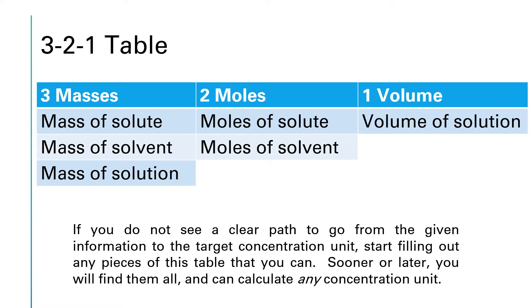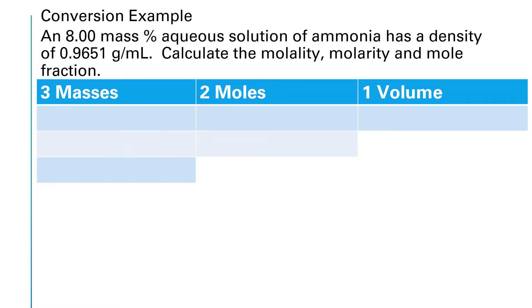Typically, once you pick your easy amount to work with and you fill it into this table, you can see something else that you can calculate. Like, if you have the mass of the solvent, you can use the molar mass to find moles of solvent. And once you start doing that, you kind of get on a roll to figure out all of these numbers. And once you have all of these numbers filled in, you can calculate any concentration unit in a pretty straightforward manner.